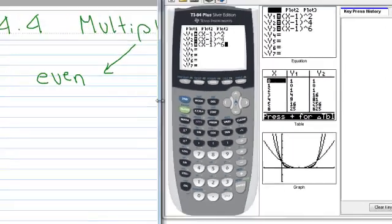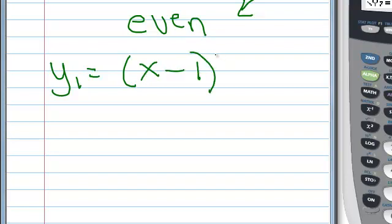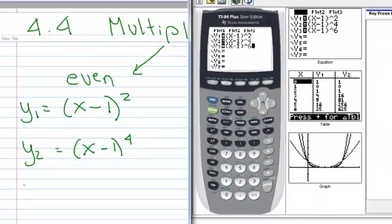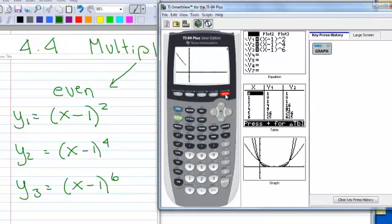Let's get out our graphing calculator, or you can just watch mine here. I have graphed three different functions. I've graphed a function that has a zero at 1 and given it a power of 2, a function that also has a zero at 1 and given it a power of 4, and the same zero at 1 with a power of 6. Let's press the graph button here and maybe it'll start.